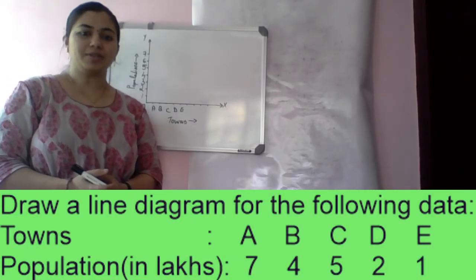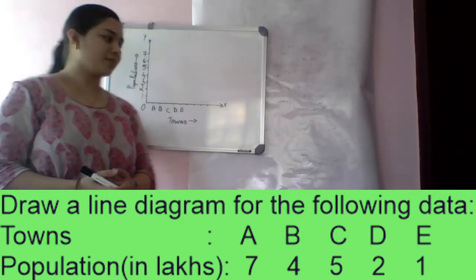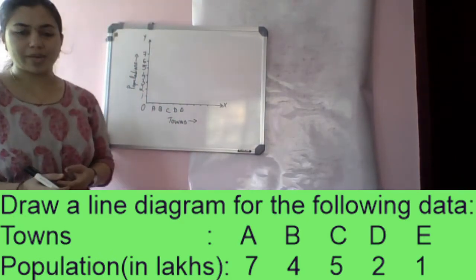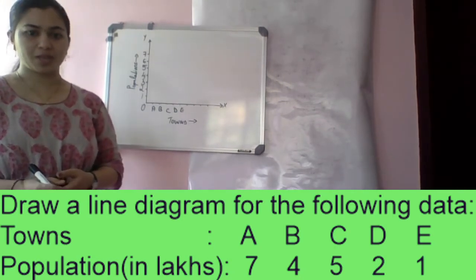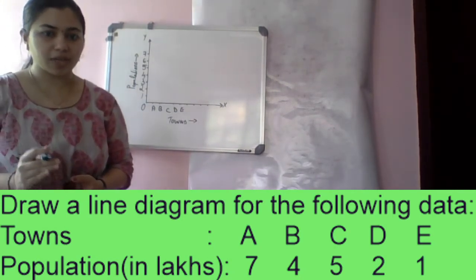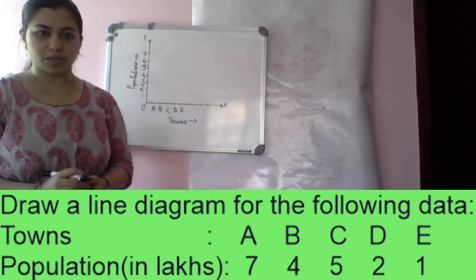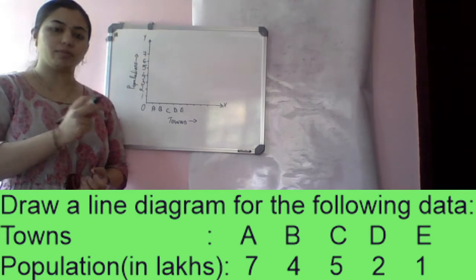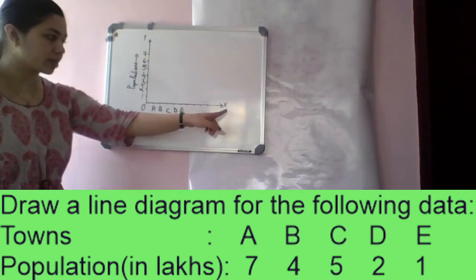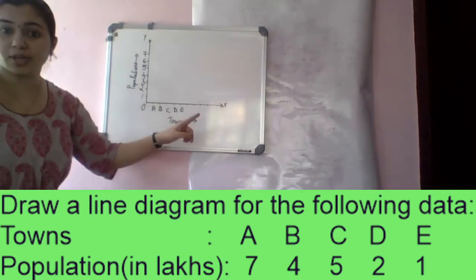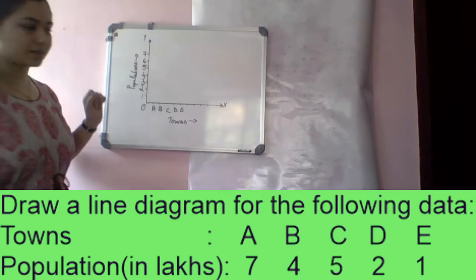Let us do an example. Question is draw a line diagram for the following data: five towns A, B, C, D, and E with populations in lakhs. For any diagram, you should draw X axis and Y axis. Towns we mark on the X axis.